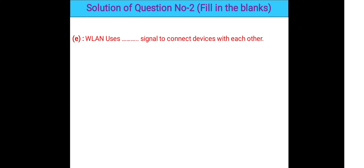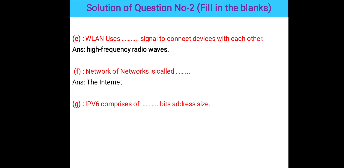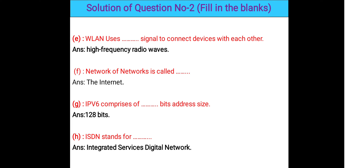Question 2e: WLAN uses blank signals to connect devices — WLAN uses high-frequency radio wave signals to connect devices without physical cables. Question 2f: Network of networks is called the blank — the answer is the Internet. Question 2g: IPv6 comprises blank bit address size — the answer is 128 bits. Question 2h: ISDN stands for blank — the answer is Integrated Services Digital Network.